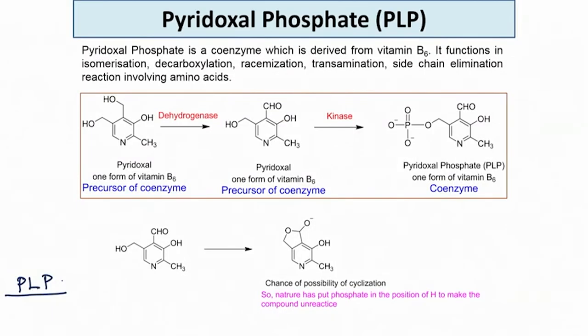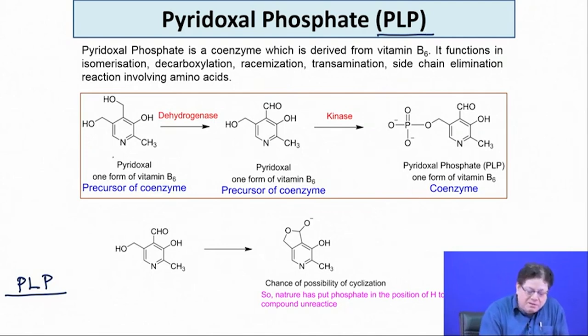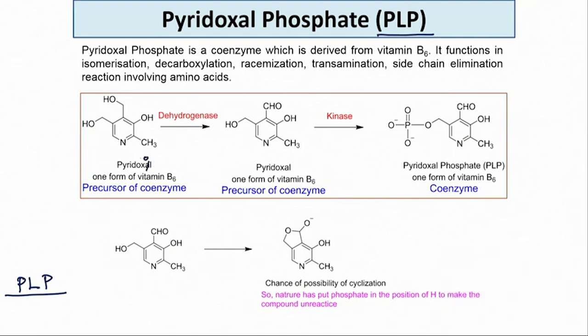Let us start with the water-soluble vitamins. The first one we want to discuss is what is known as pyridoxal phosphate, abbreviated as PLP. PLP is the final coenzyme form — this is not the vitamin itself. The vitamin is pyridoxal, that is the alcohol form.